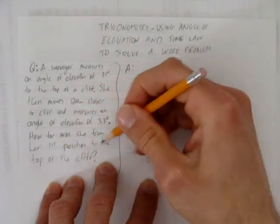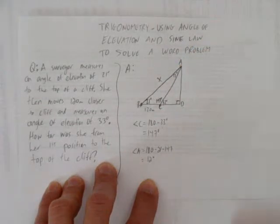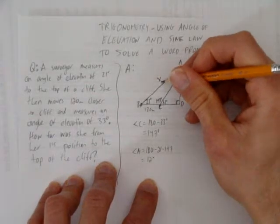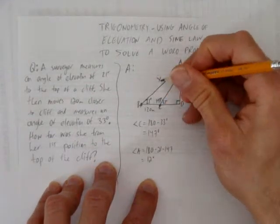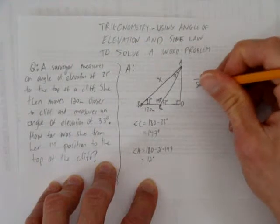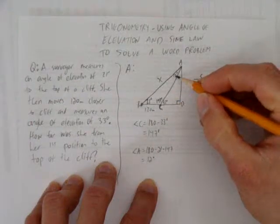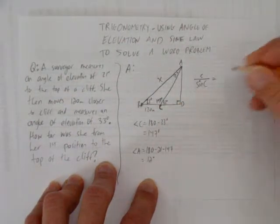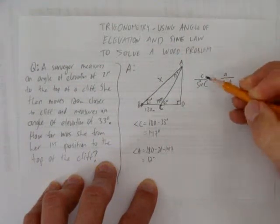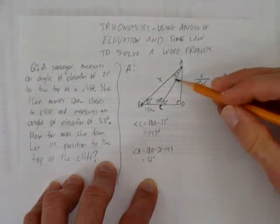What are we trying to find? Her first position distance to the top of the cliff. That is, how far is it from here to here? We'll call that x. And so now we can set up sine law. We want to solve for this x, which is little baby c, the side across from big angle C. So I'm going to use the sine law of little c over the sine of big C equals baby A over the sine of angle A.